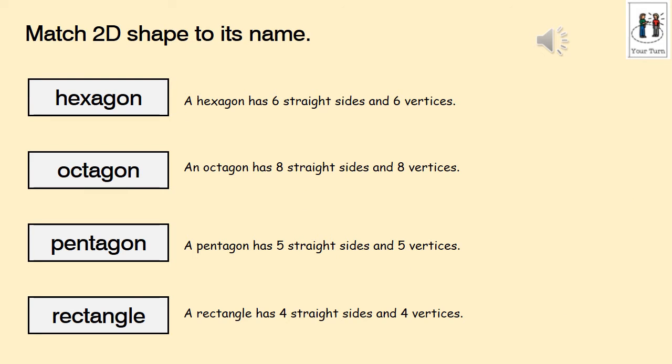A hexagon has six straight sides and six vertices. An octagon has eight straight sides and eight vertices. A pentagon has five straight sides and five vertices. A rectangle has four straight sides and four vertices.